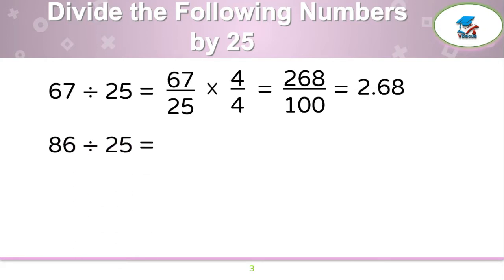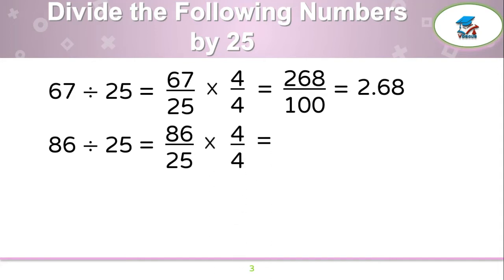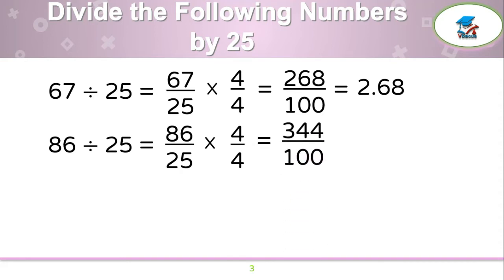Let us take one more example: 86 by 25. Write 86 over 25, which should be multiplied by 4 over 4. 86 times 4 is 344, and 25 times 4 is 100, and your answer is 3.44.